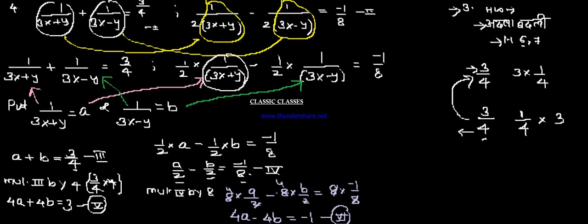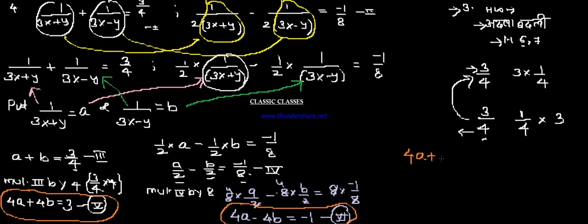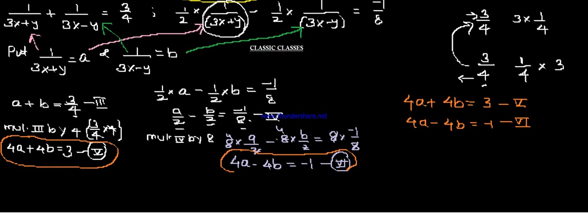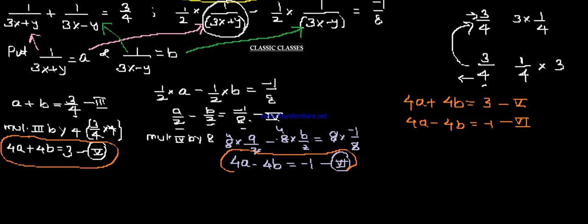Now we have to deal with equation number 5 and equation number 6. I hope you can solve these equations and get the values of a and b. Let me tell you: 4a plus 4b equals 3, and 4a minus 4b equals minus 1. Using the basic three rules, solve these. You will get a equals 1 by 4 and b equals 1 by 2.